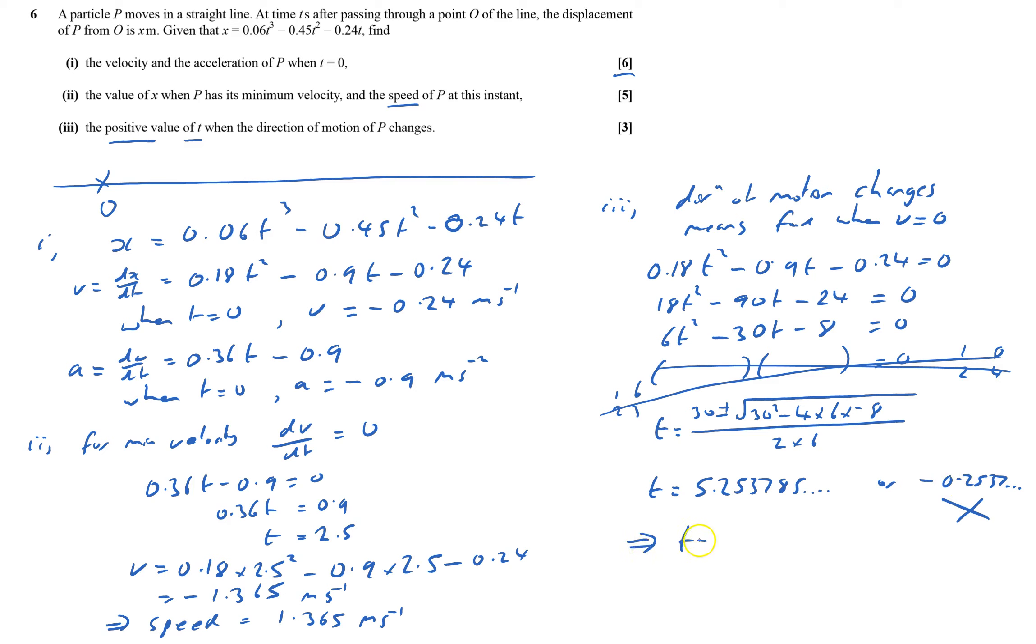It obviously can't be that because it said it had to be a positive value. Therefore, t equals 5.25 to 3 significant figures. And that's question 6 done.